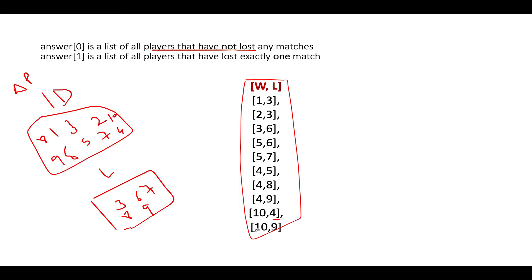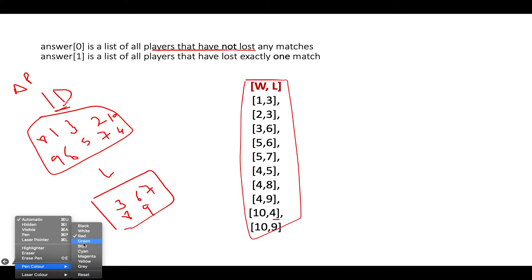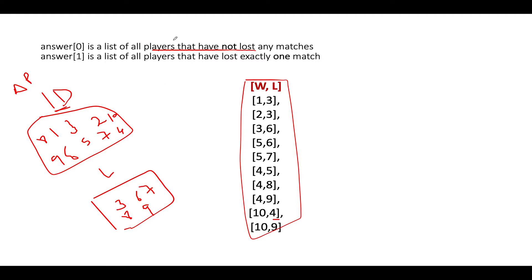We will not add 4 again. Next, 10 and 9: both already present. We have now identified all player IDs in the tournament and also the LoserSet of players who lost at least one match. To find the first entry of our answer — players with zero losses — we iterate through AllPlayerSet and cherry-pick IDs not present in LoserSet.